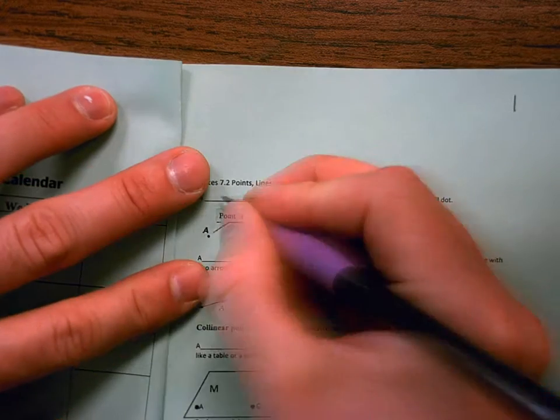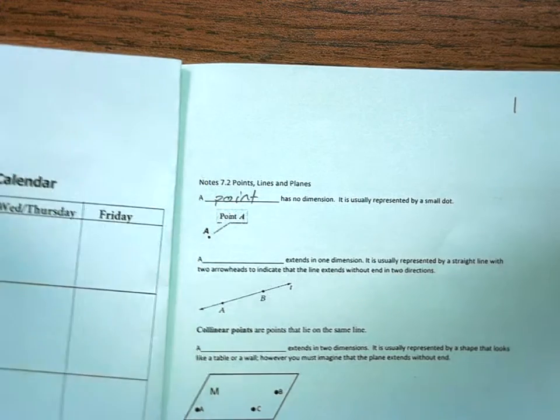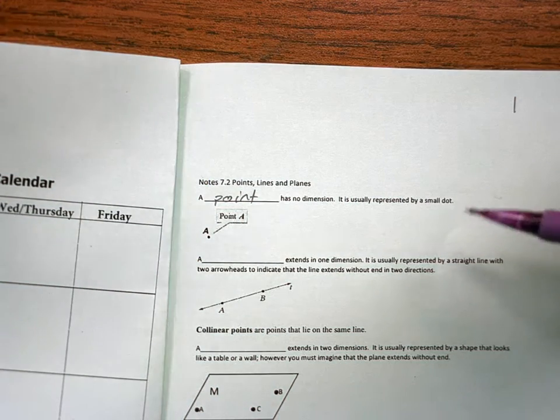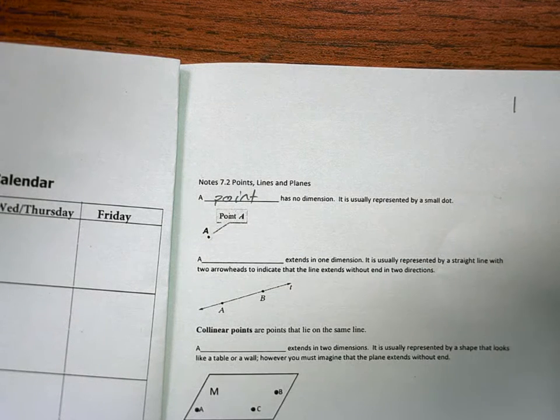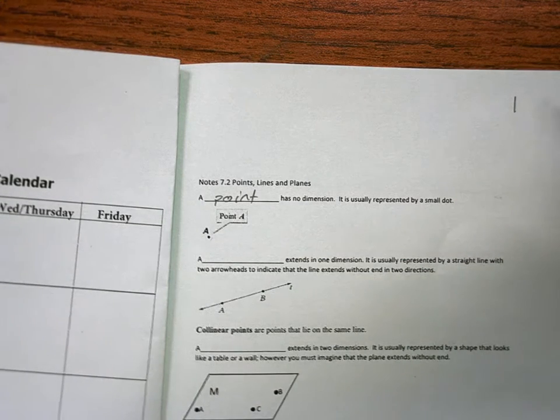Okay, so 7.2, as Sierra said, this is a point. A point has no dimension. It is usually presented by a small dot, like so. And you describe it as point A, just like it's given to you.